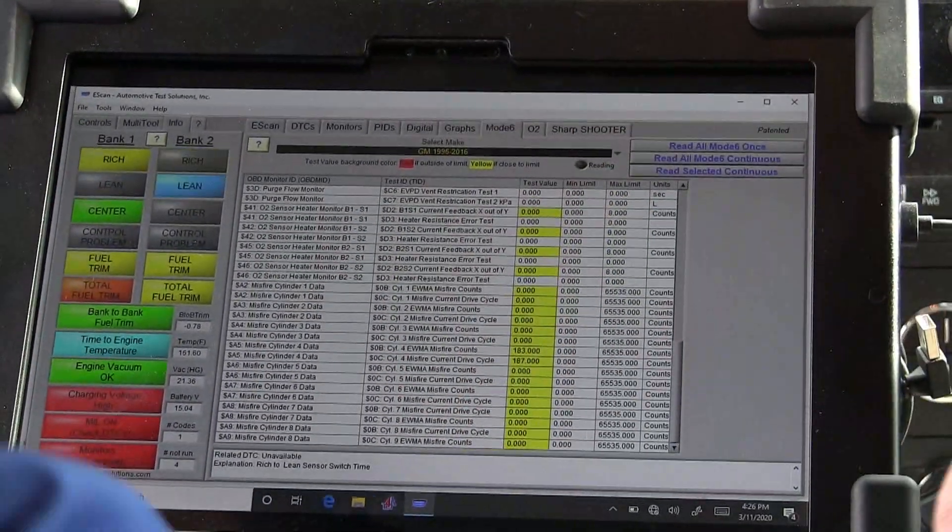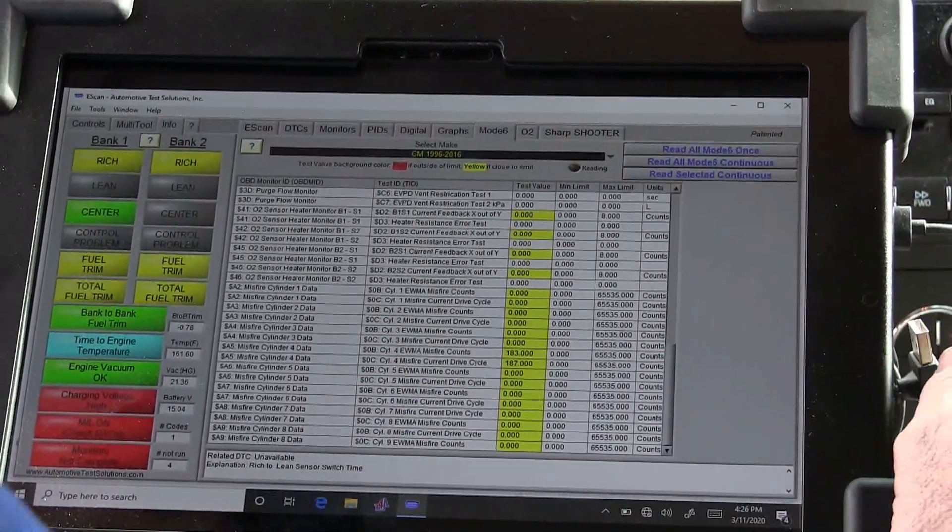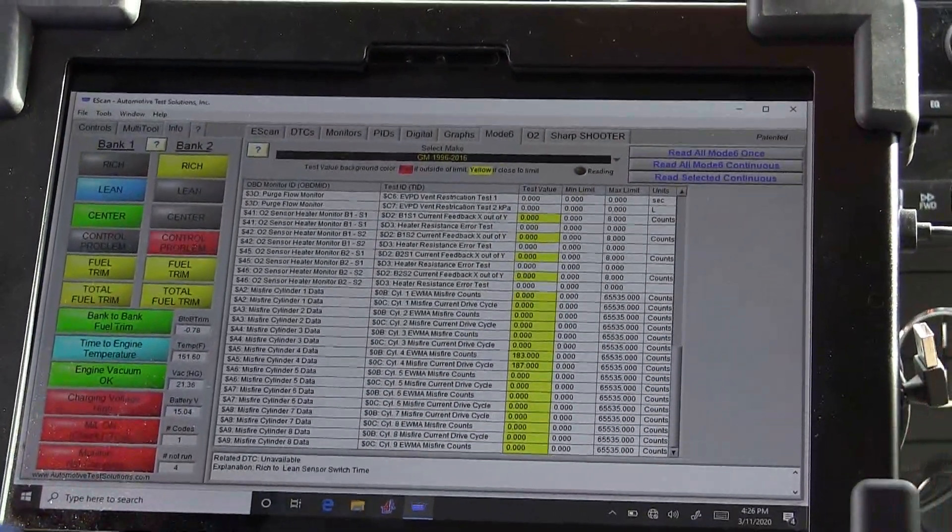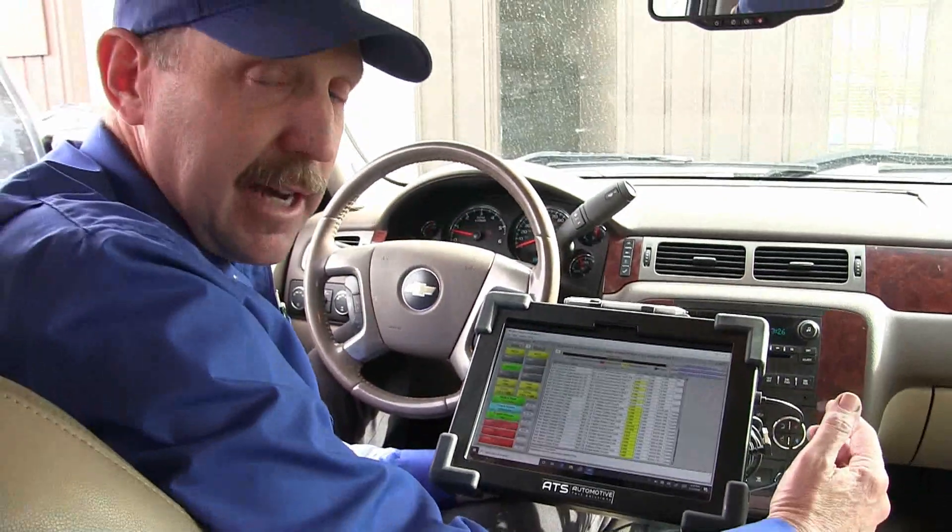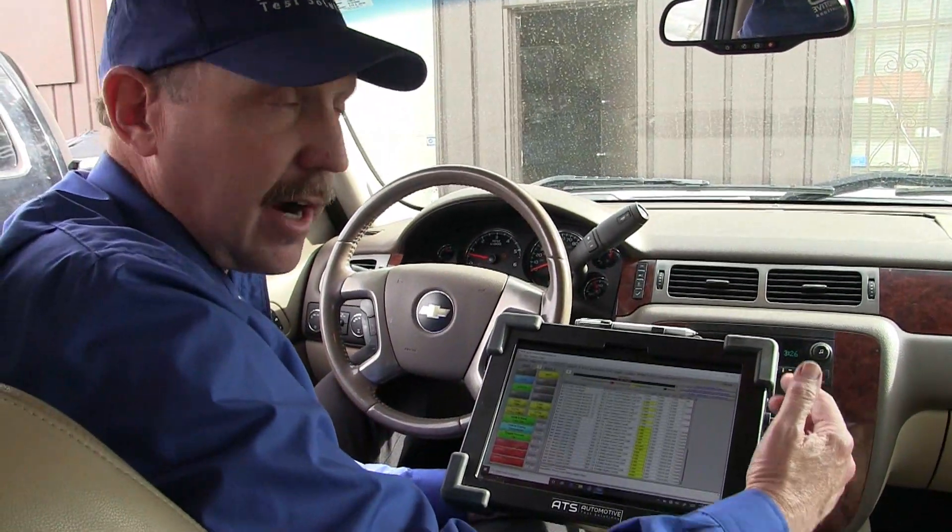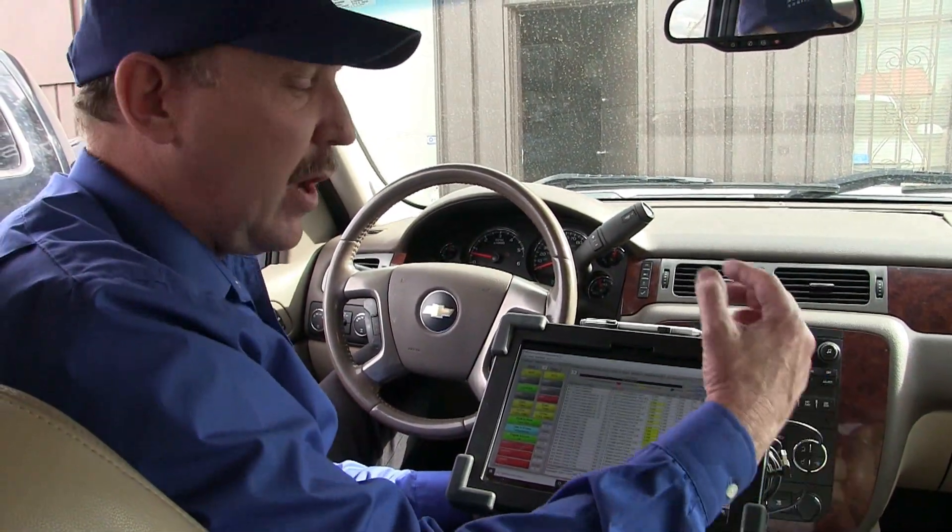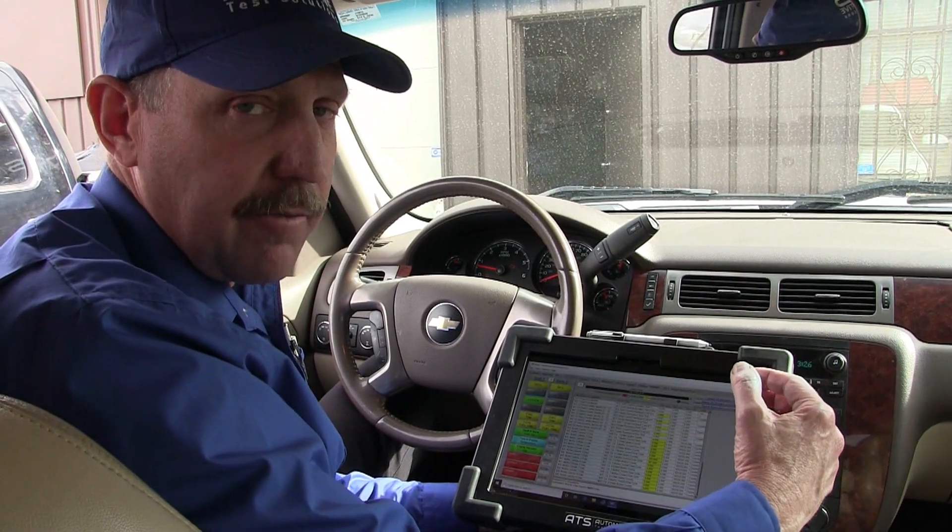When we go to Mode 6, we also have four indicating that it's been misfiring. So according to the scan tool, our best chance of finding the misfire is on Cylinder 4, but we always want to double check the data from the scan tool.